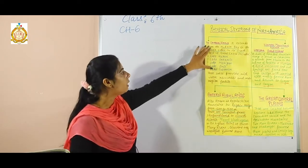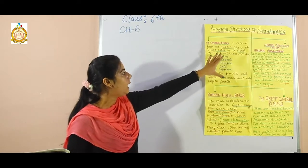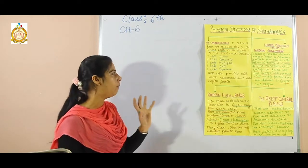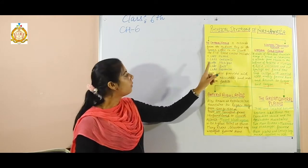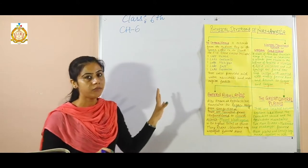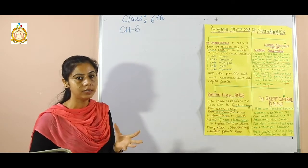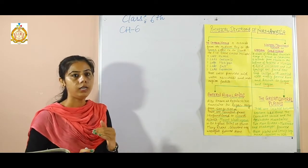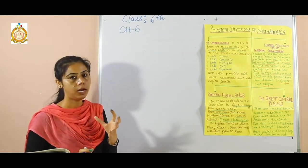The Canadian Shield is also popularly known as the Laurentian Shield and it extends from the Hudson Bay to the Great Lakes in North America. The five Great Lakes include Lake Huron, Lake Ontario, Lake Michigan, Lake Erie, and Lake Superior. These five Great Lakes make the Canadian Shield and Laurentian Shield rich with water sources and also provide fertile land suitable for agriculture and flora and fauna.